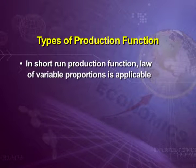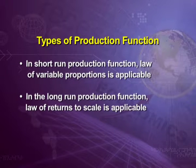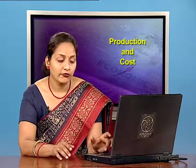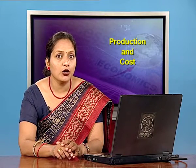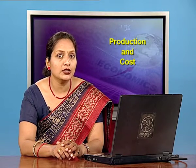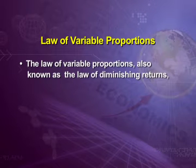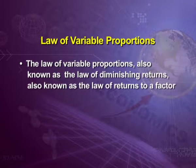In short run production function, law of variable proportions is applicable, and in the long run production function, law of returns to scale is applicable. First, we will understand the law applicable in short run. The law of variable proportions is also known as the law of diminishing returns. It is also known as the law of returns to a factor.